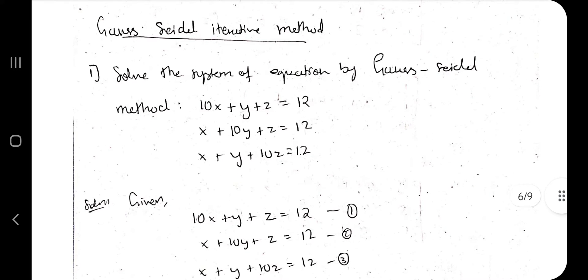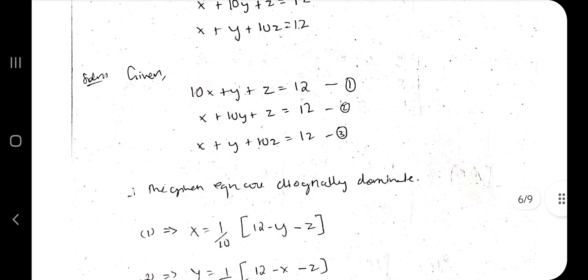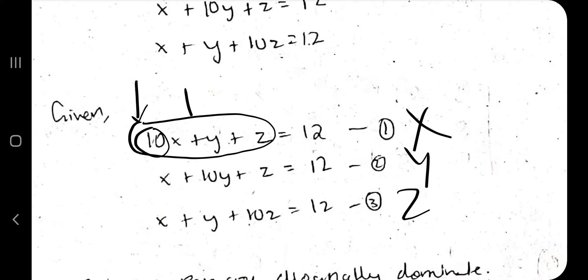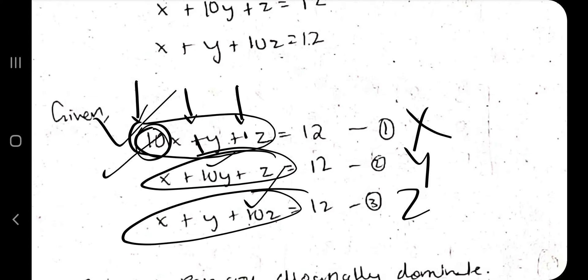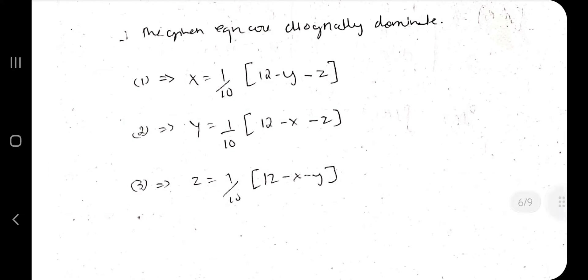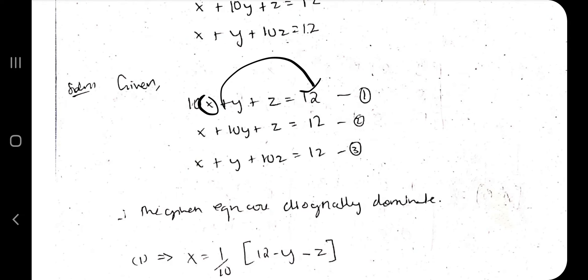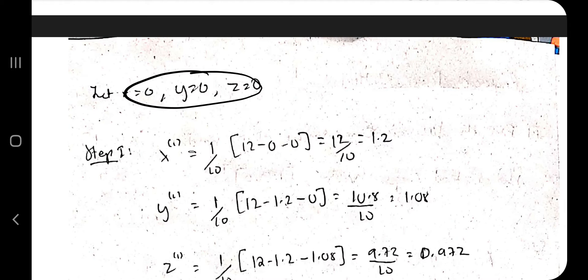The third method is Gauss-Seidel, an iterative method. Again, three equations are given. Before proceeding, verify diagonal dominance: for each equation, the coefficient of the diagonal variable must be the largest among all coefficients in that equation. For example, for x the coefficient is 10, compared to 1 and 1 for the others — so yes, it passes. Once confirmed for all three, rearrange each equation to isolate one variable: x = (1/10)(12 − y − z), and similarly for y and z.